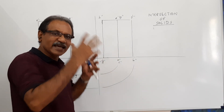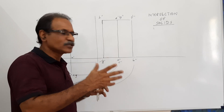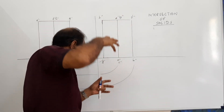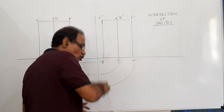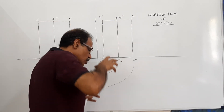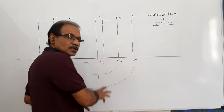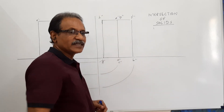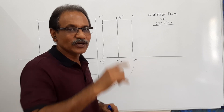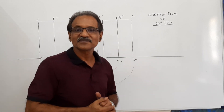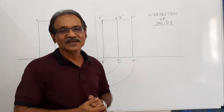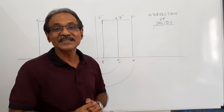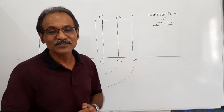Now, if you penetrate the same cylinder into this wall at an angle, and let it go into the wall, what is the joint? The joint is an ellipse.